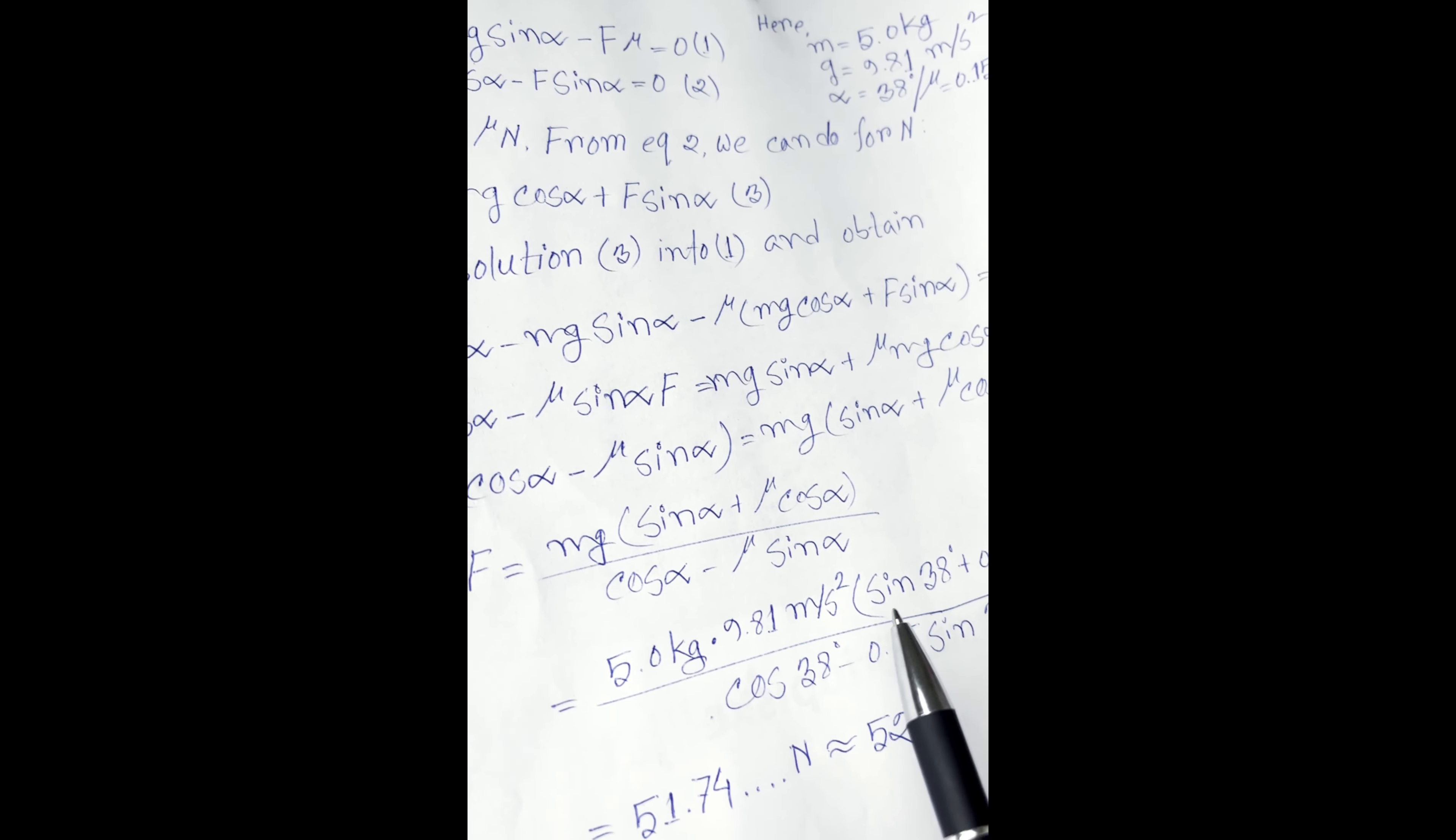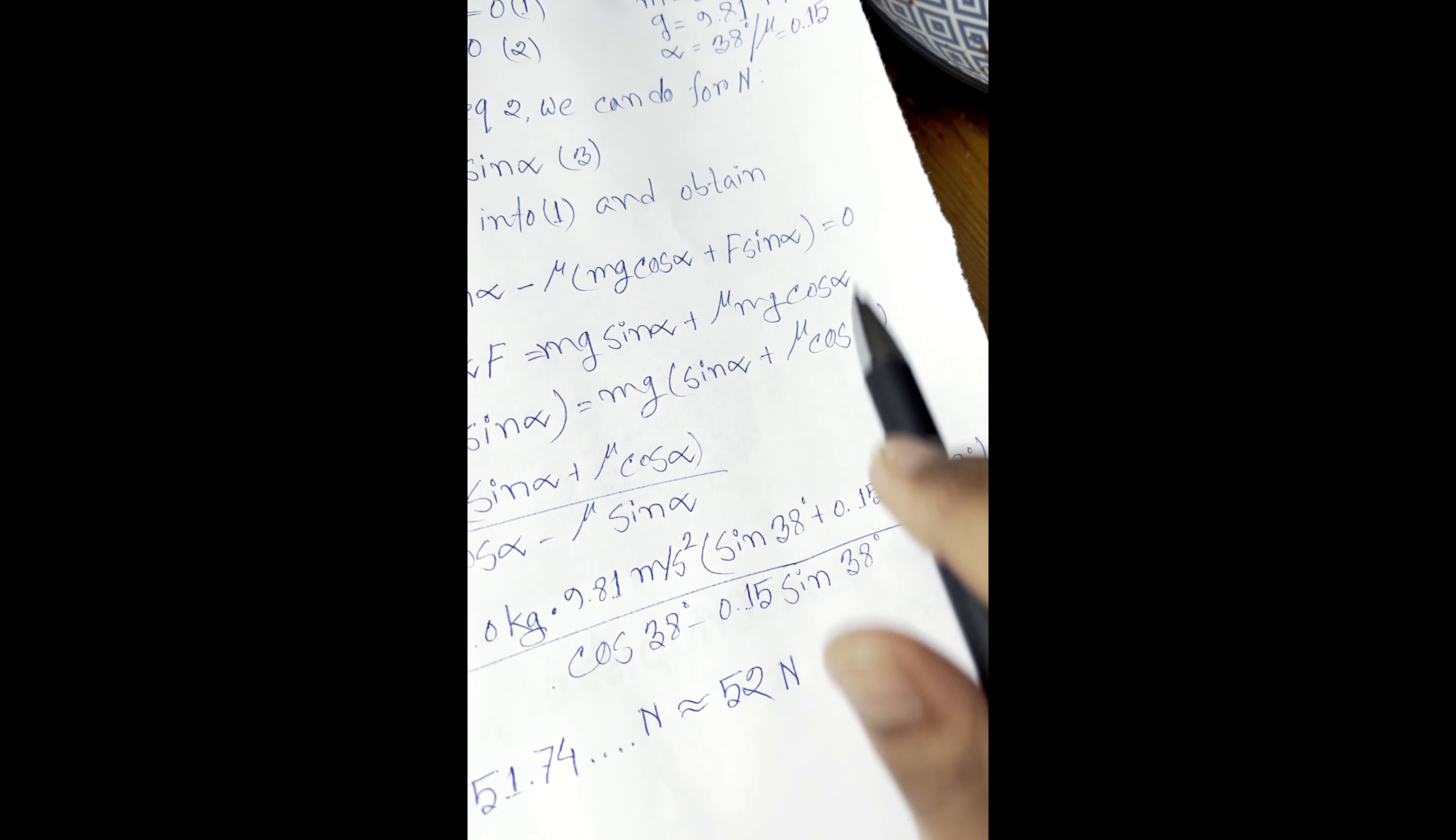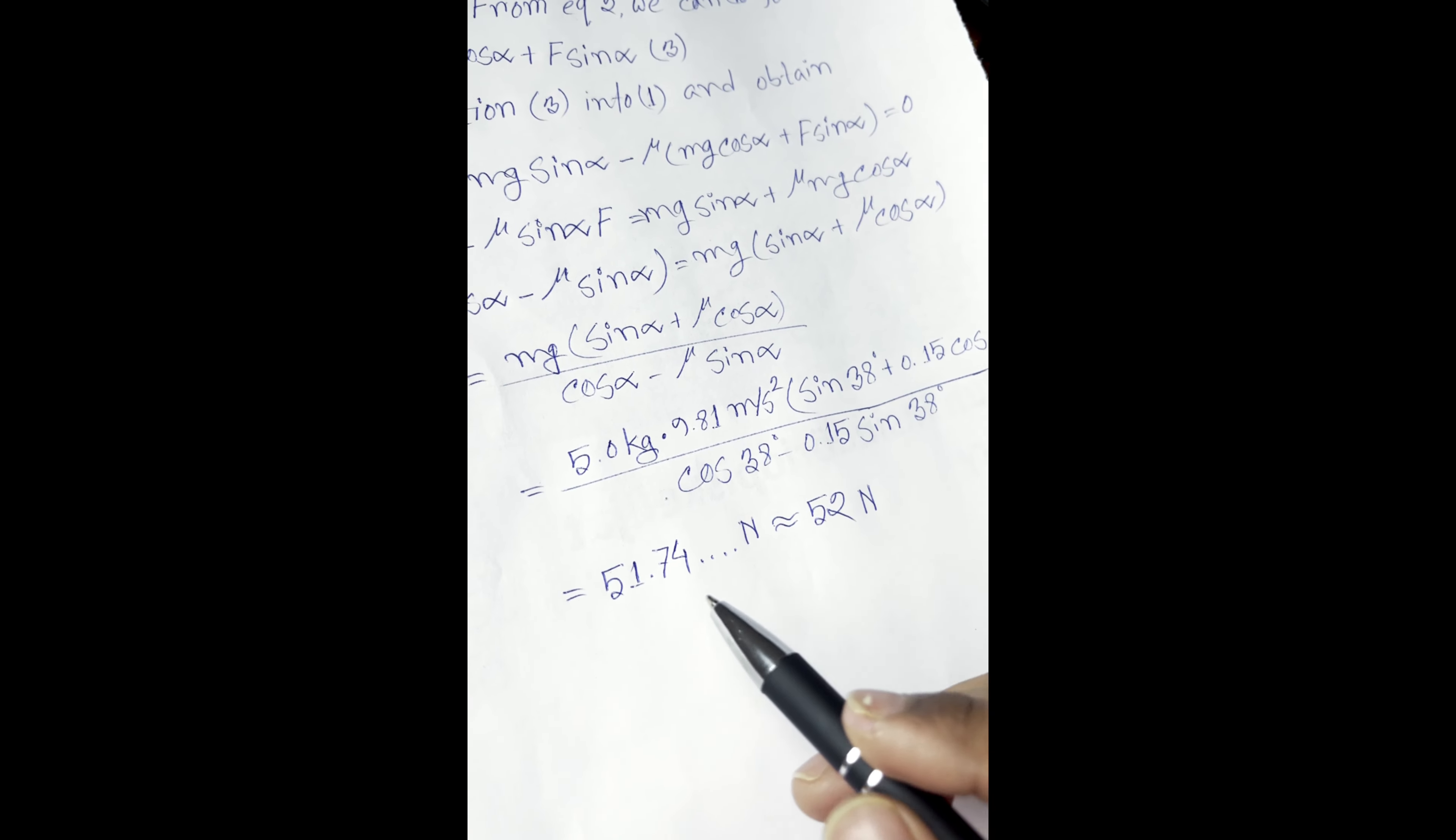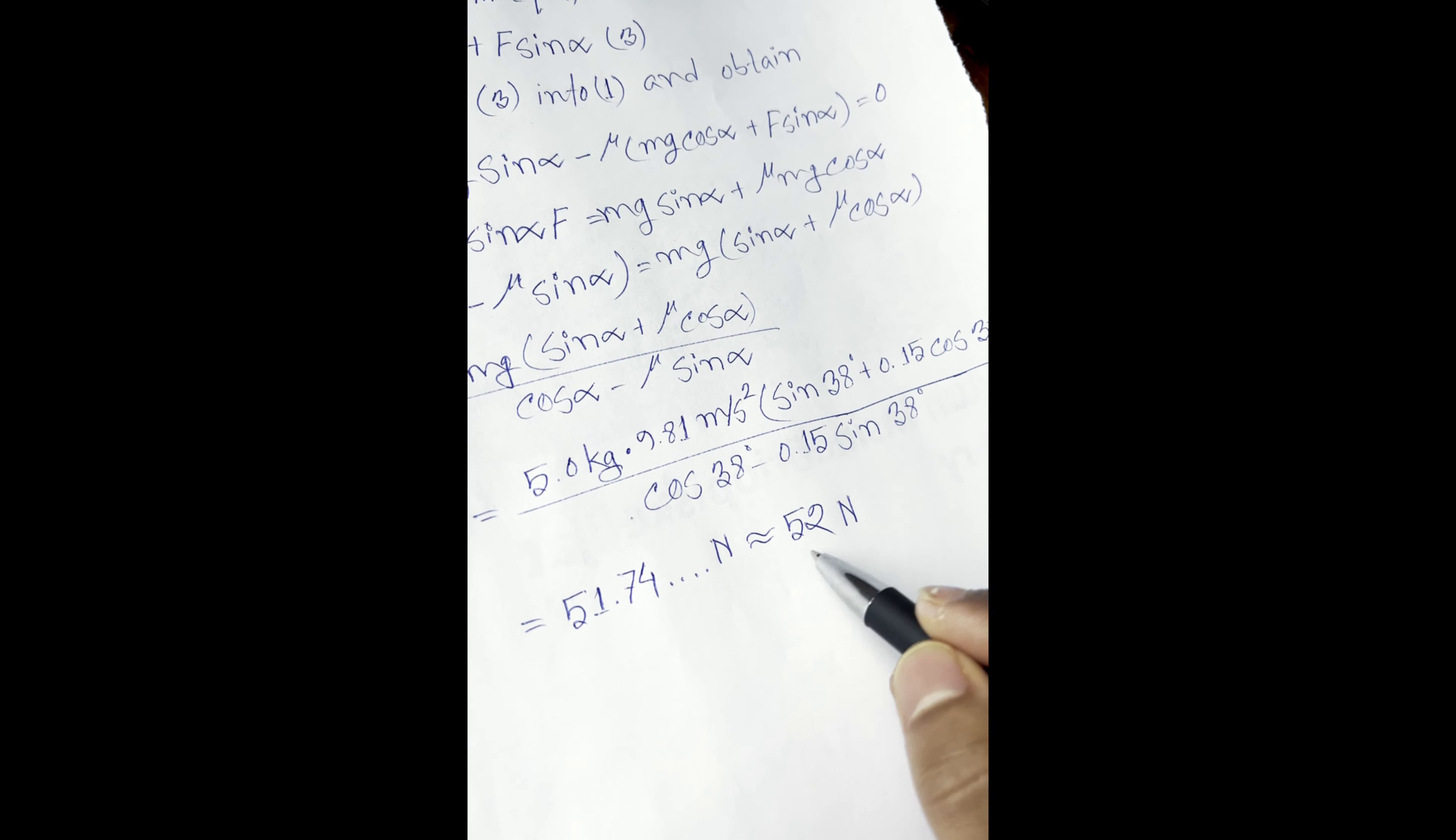Here m equal to 5 kg, g equal to 9.81, sin θ from that 38 degree, and mu is 0.15, cos θ means 38 degree divided by cos 38 minus mu sin θ. After calculating this we find 51.74 N, it's most probably this one.